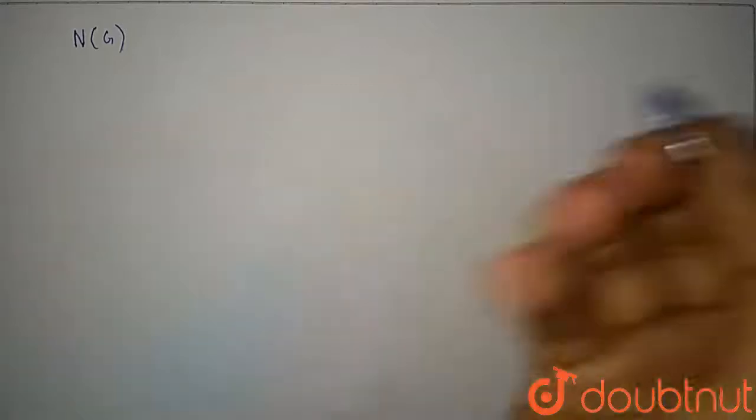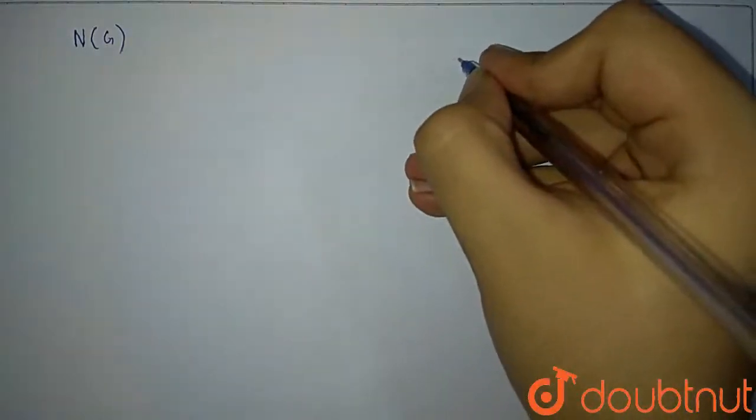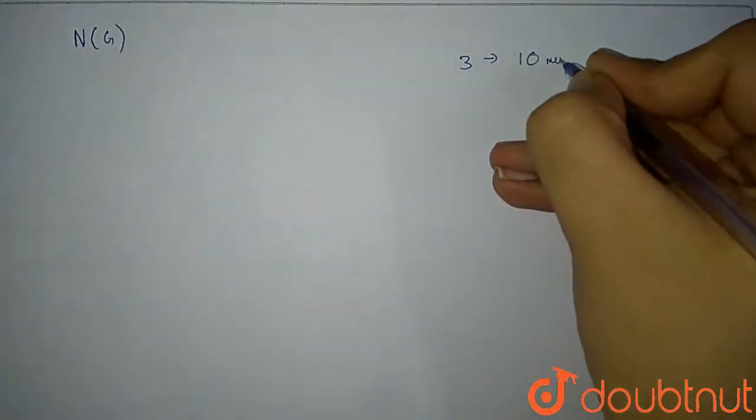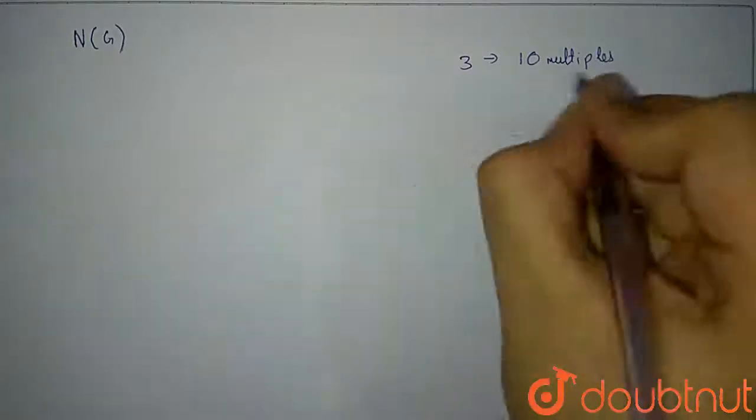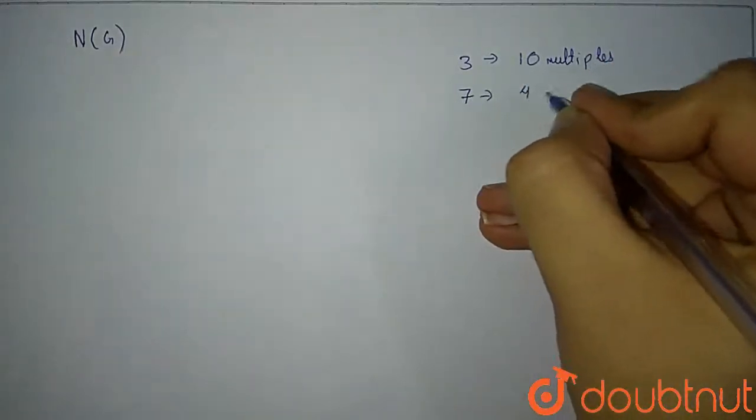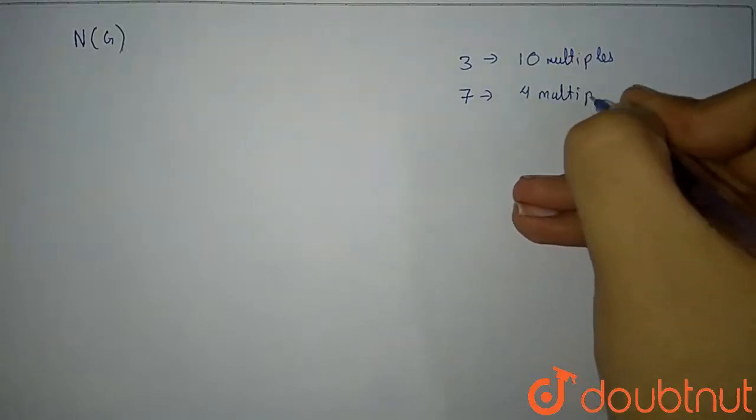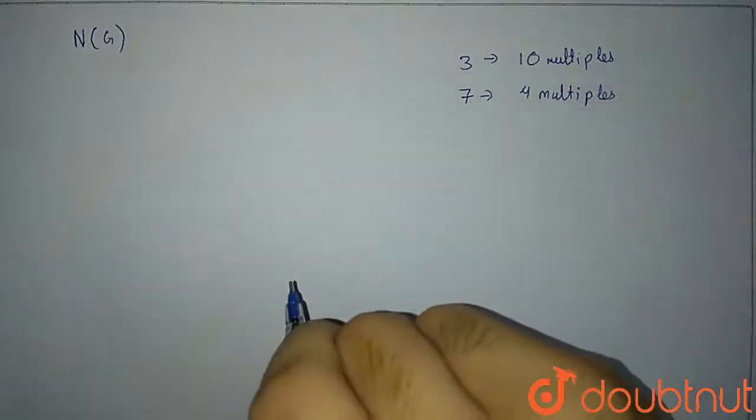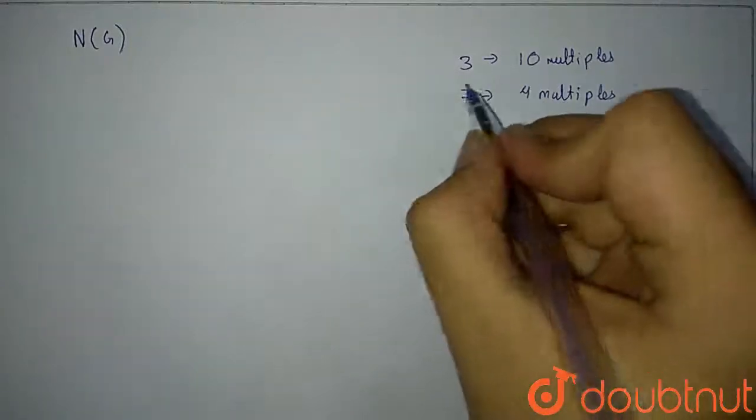What was our event G? G is such that the ticket has a multiple of three or seven. How many multiples of three do we have? We have 10 multiples of three. We checked this in the previous case. How many multiples of seven do we have? We have four multiples of seven. This we also checked. But how many multiples of three or seven do we have?